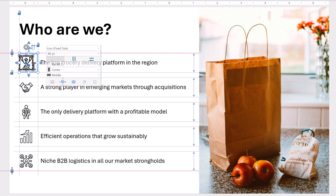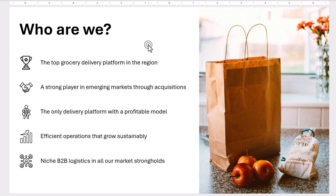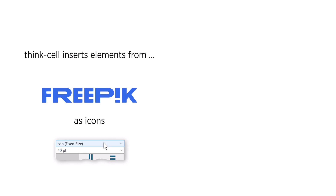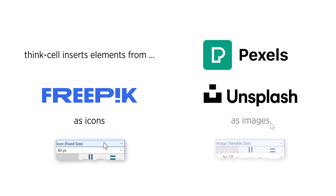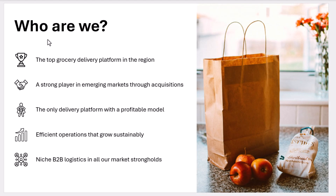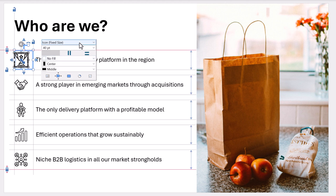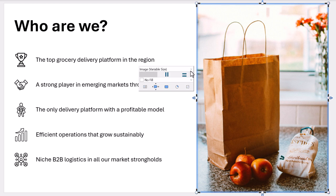In the mini toolbar, you can also choose the horizontal or vertical alignment of icons. ThinkCell inserts elements from FreePik as icons and elements from Pexels, Unsplash, and other providers as images. However, you can change this behavior at any time. For example, in the mini toolbar, you can make an element from FreePik behave like an image by selecting Image, or make an element from Pexels behave like an icon by selecting Icon.